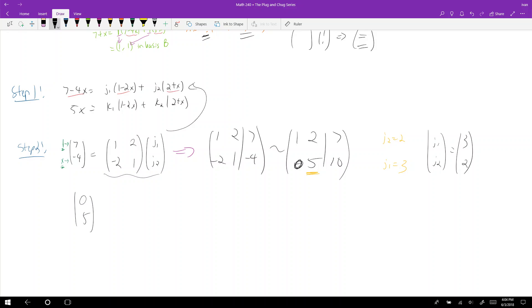We do the same thing with 5x. Well, 5x is 0, 5. Again, remember, this is 1 and this is x. That's equal to, well, it's also 1, negative 2, 2, 1. But this time, I'm multiplying k1, k2. So I do my augmented matrix, 0, 5. Do reduction and get 1, 2, 0, 5, 0, 5. So I get k1, k2 is equal to negative 2, 1. And now what do I do?